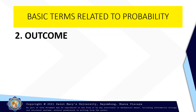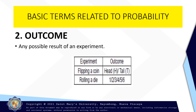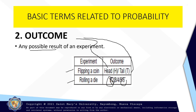We have number two: outcome. An outcome is any possible result of an experiment. For example, the given experiment is flipping a coin. Then maybe the outcome will be head, or maybe the other outcome will be tail. Another experiment: if you roll a die, maybe your outcome is one, two, up to six. That is an outcome, or possible result of your experiment.